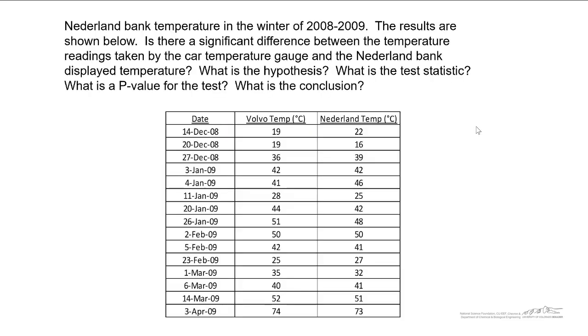To start us off, I've got an example here. Back in the winter of 2008 to 2009, I would go cross country skiing a lot and I would pass through Nederland, which is to the west of Boulder. I would look at the thermometer on my Volvo, and as I drove past the Nederland bank, I would record the temperatures for both of those. For example, my Volvo temperature reading might be 19, and the bank might be reading 22 degrees. What we're trying to do is, is there a significant difference between the temperature reading on my Volvo and the thermometer at the Nederland bank?